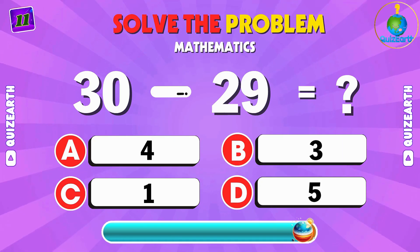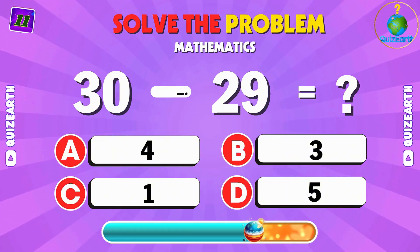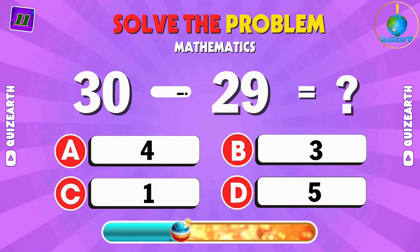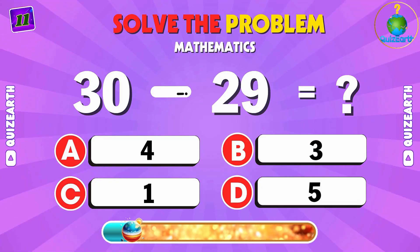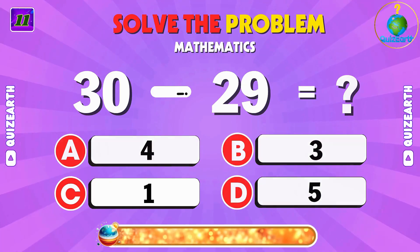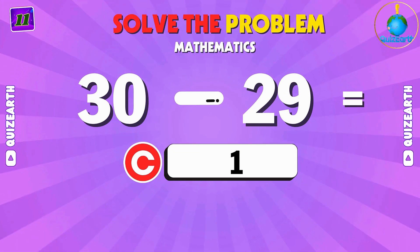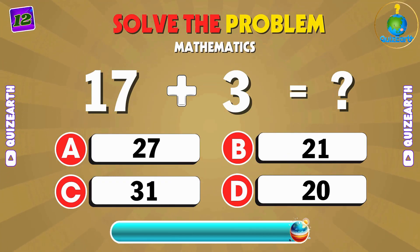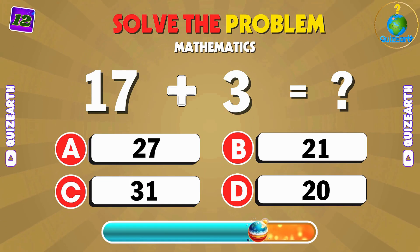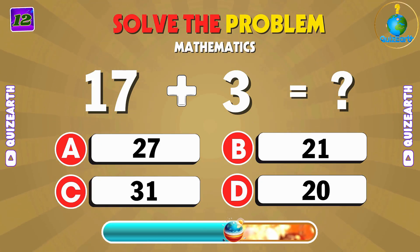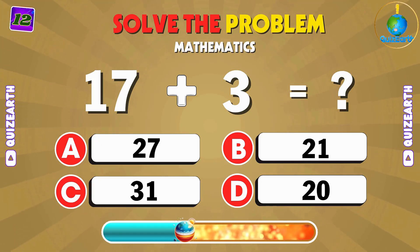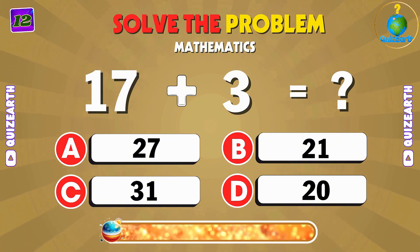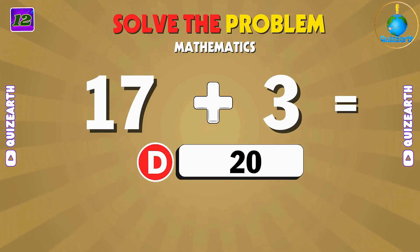Almost the same — what's 30 minus 29? C: 1. Add 17 and 3 — quick addition. D: 20.